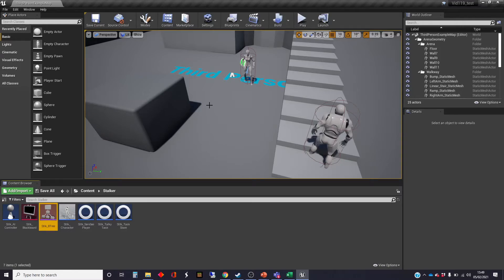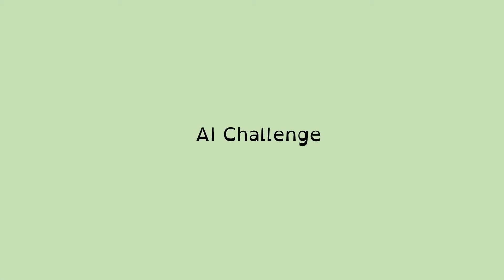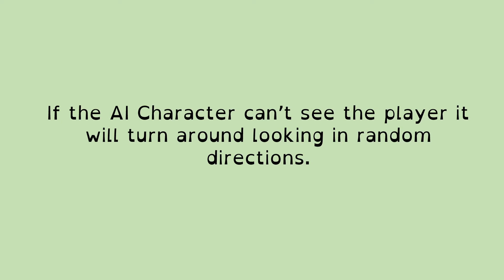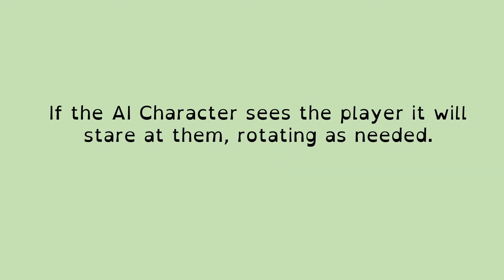So let me break off quickly and remind you what the example is. The AI character is going to stand on the spot, and if it can't see the player, it'll keep turning around, looking in random directions. So every few seconds it will turn and face a different direction, looking for the player. If the AI character catches sight of the player, it will stare at them, rotating on the spot to keep facing the player as if watching them carefully.